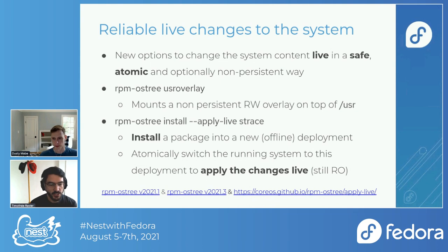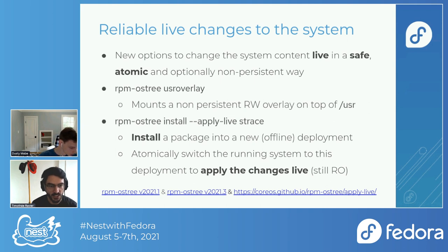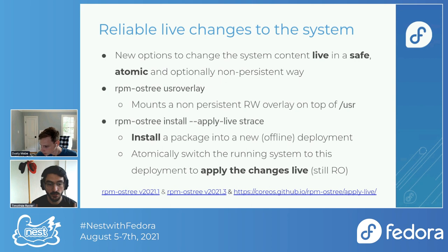On top of Cgroup v2 changes, we added new features to RPM-OSTree that enable reliable live changes on the system. We call Fedora CoreOS an immutable operating system, but it's immutable in the sense that you control when and how it gets changed. We have several commands in RPM-OSTree that enable you to do changes on the system live in a reliable and safe way. The first one you may already be familiar with is 'rpm-ostree usroverlay', which creates a temporary filesystem mounted on top of /usr and enables any modifications you want — though they are non-persistent.